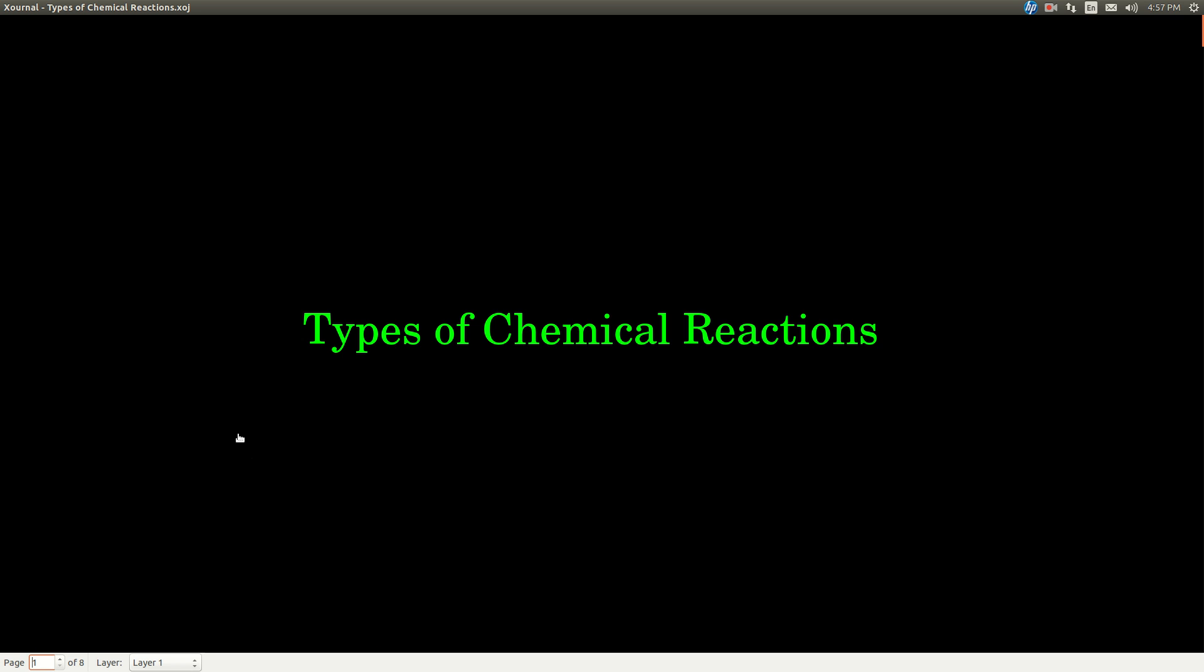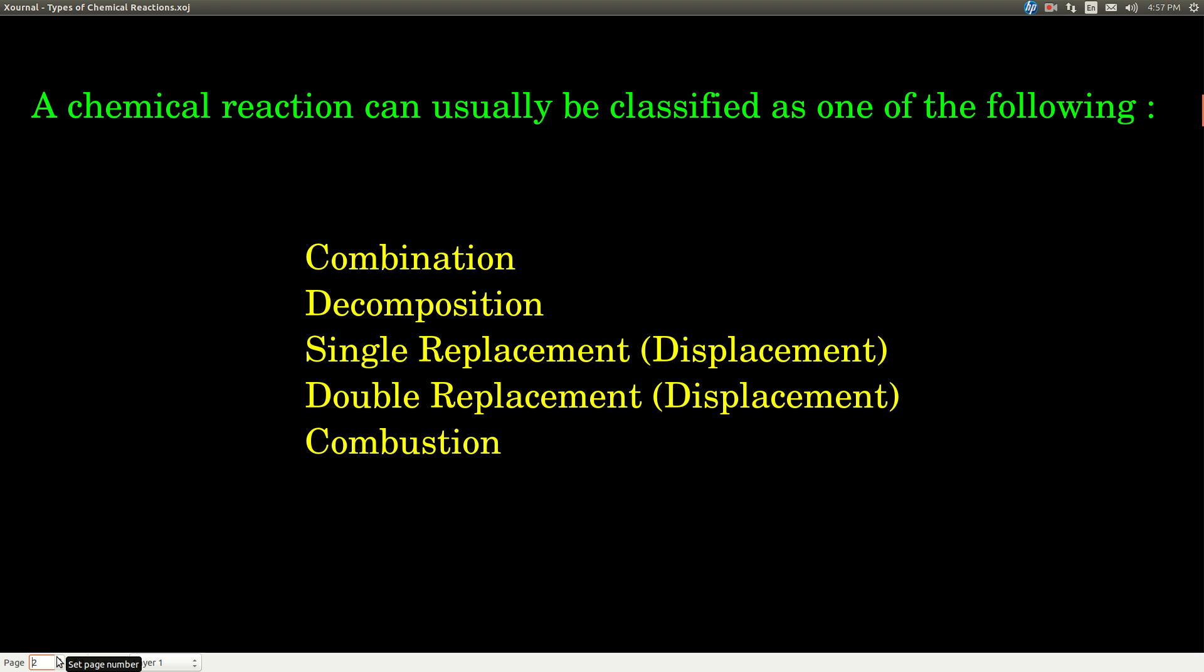In this video, we're talking about different types of chemical reactions, so one way of classifying chemical reactions. We can classify most chemical reactions according to one of the following types: combination, decomposition, single replacement, which sometimes you'll see called single displacement, means the same thing, double replacement or double displacement, and combustion.